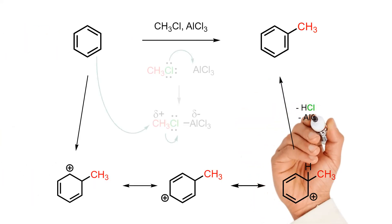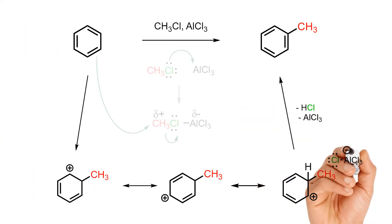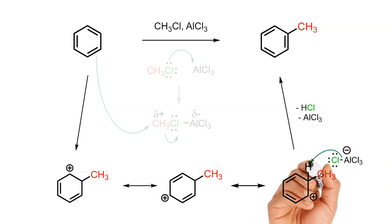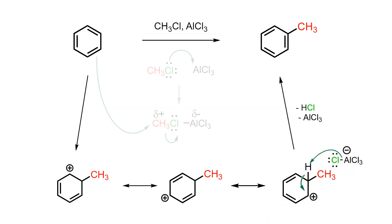The second and final step of the mechanism involves the halide deprotonating the sigma complex, and two electrons being pushed back into the pi system in order to regenerate the aromatic pi system. This also gives hydrogen chloride as a byproduct and regenerates the Lewis acid catalyst.